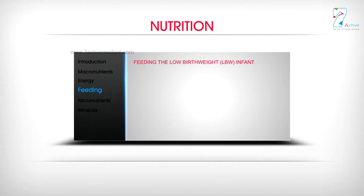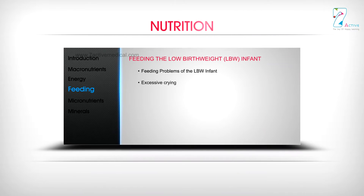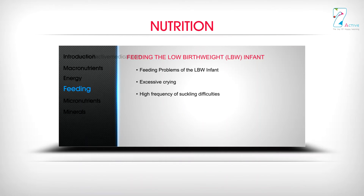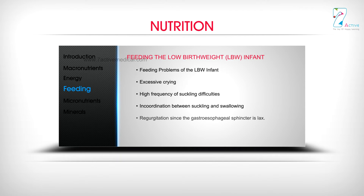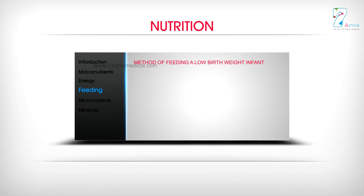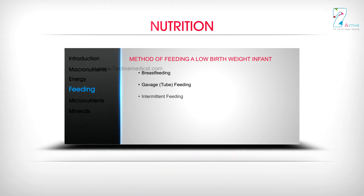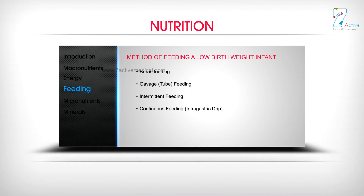Feeding problems of the low birth weight infant include excessive crying, high frequency of suckling difficulties, incoordination between suckling and swallowing, regurgitation due to a lax gastroesophageal sphincter, and poor tolerance for saturated fatty acids. Methods of feeding a low birth weight infant include breastfeeding, gavage tube feeding, intermittent feeding, continuous intragastric drip, and paladin or katori spoon feeding with expressed breast milk.